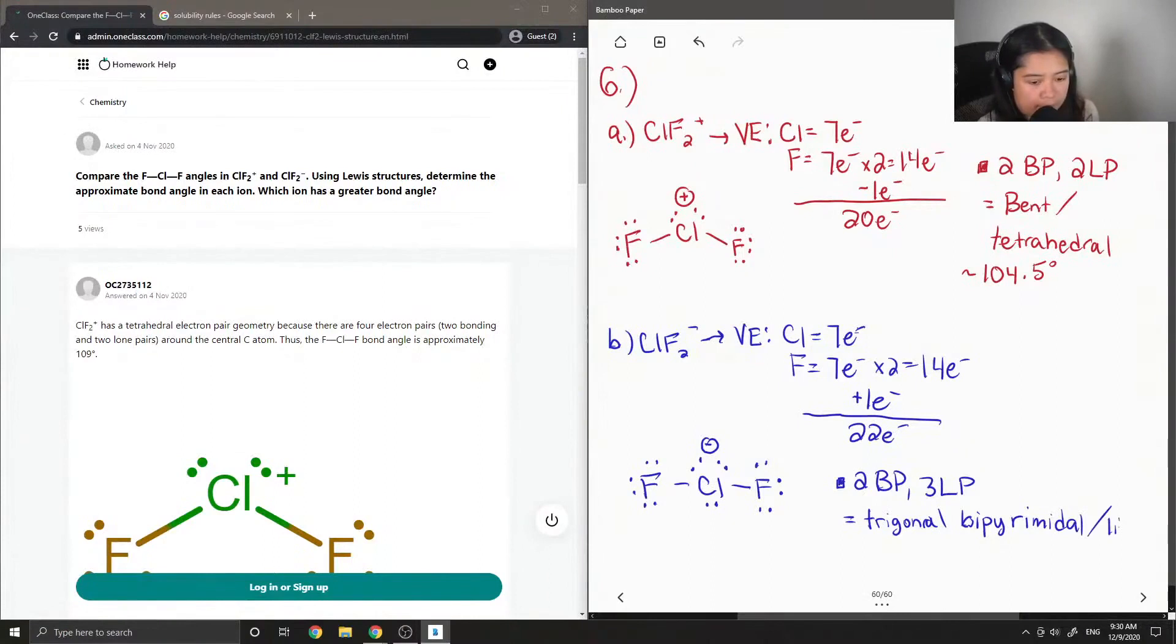And linear. So because of the extra lone pair on the chlorine, this changes the shape altogether. And now we have limited angle movement from our fluorine bonding groups, and it basically has a bond angle of 180 degrees.